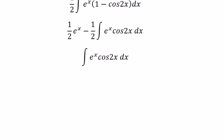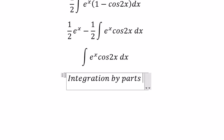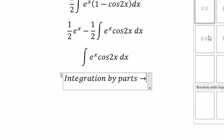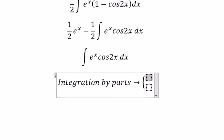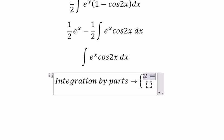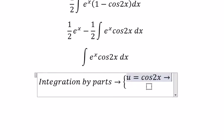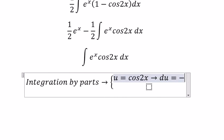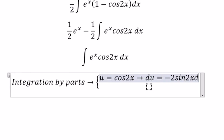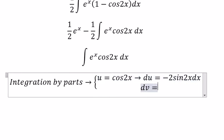First, we use integration by parts. We have u = cos2x, so du = -2sin2x dx. We have dv = e^x dx, so v = e^x.